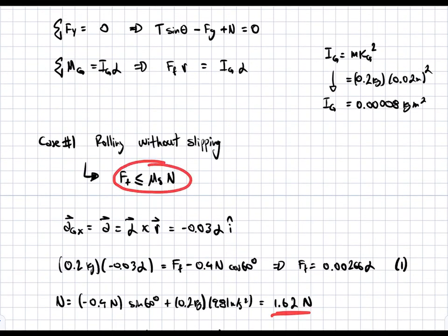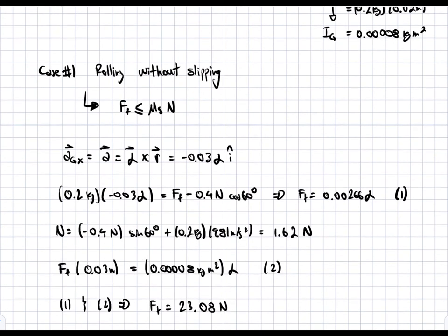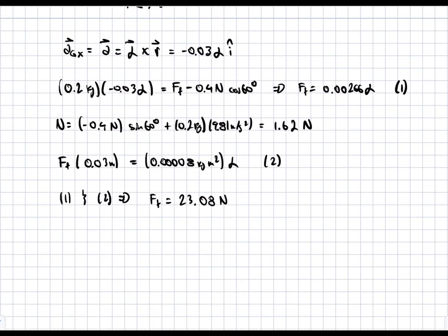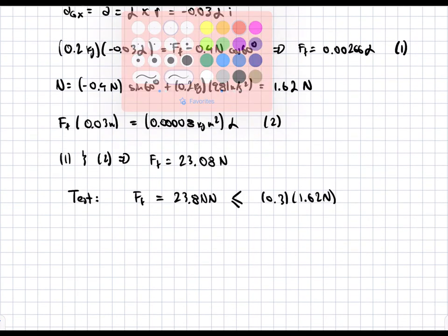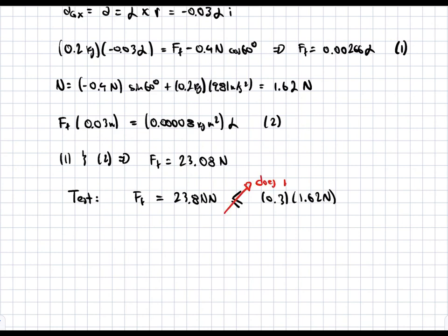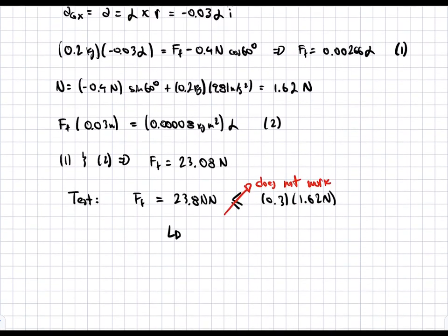Now we test the rolling-without-slipping hypothesis. We have μ_s equal to 0.3. Testing: F_F equals 23.08 N must be less than or equal to μ_s × N equals 0.3 times 1.62 N equals 0.486 N. This does not hold — 23.08 N is much larger than 0.486 N. Therefore rolling without slipping is impossible, and there must be slipping.